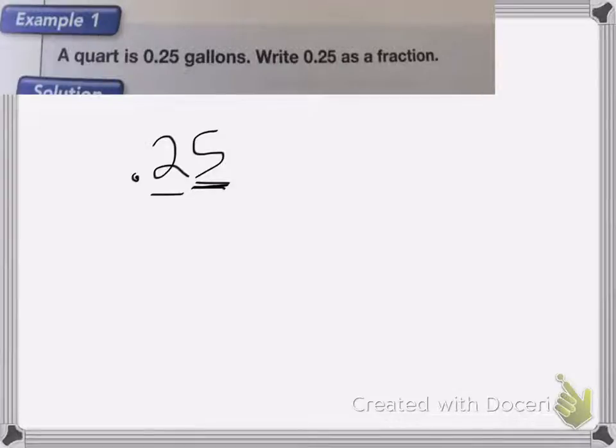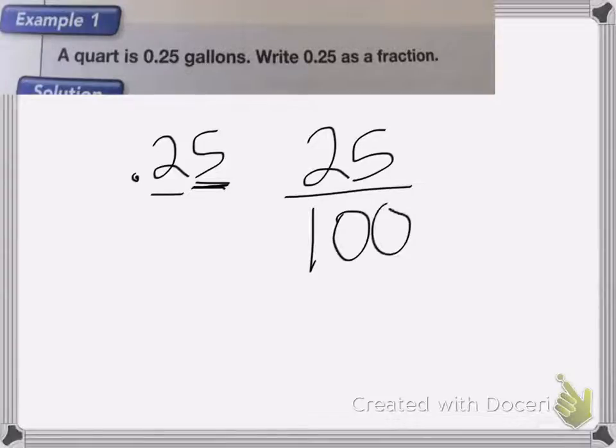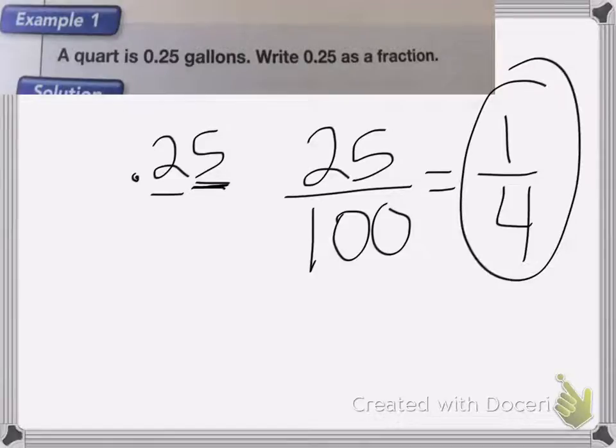What we need to write our fraction as, it will be 25 hundredths, because the 25 is in the hundredths place value. Now we can't keep it like that, we actually need to reduce it, so 25 hundredths reduces down to 1 fourth. You can divide both the top and the bottom by 25, and that is the correct answer.